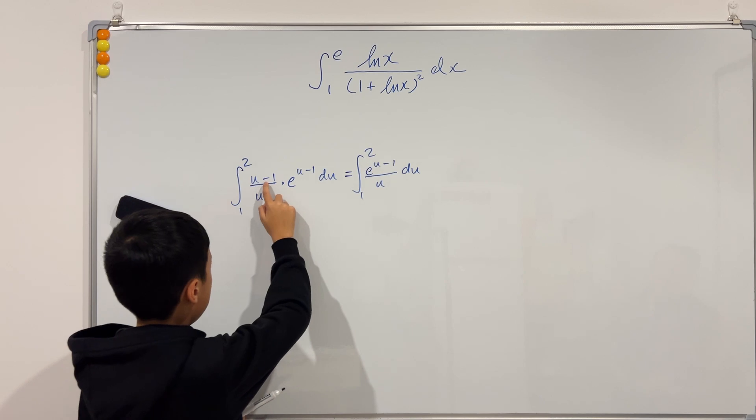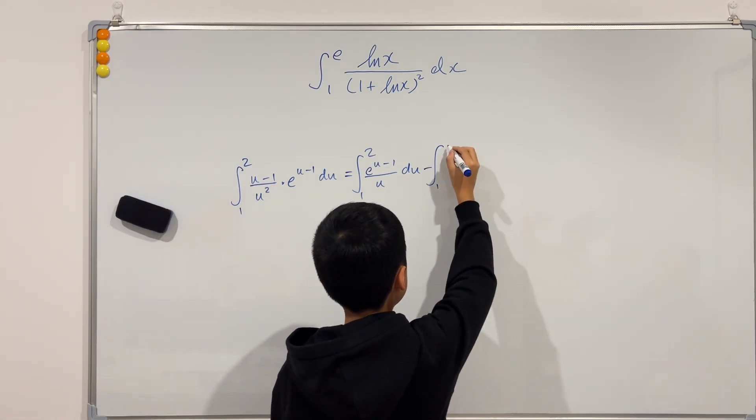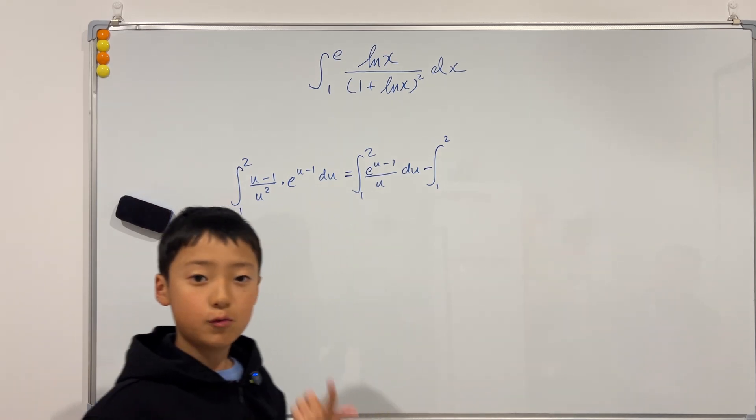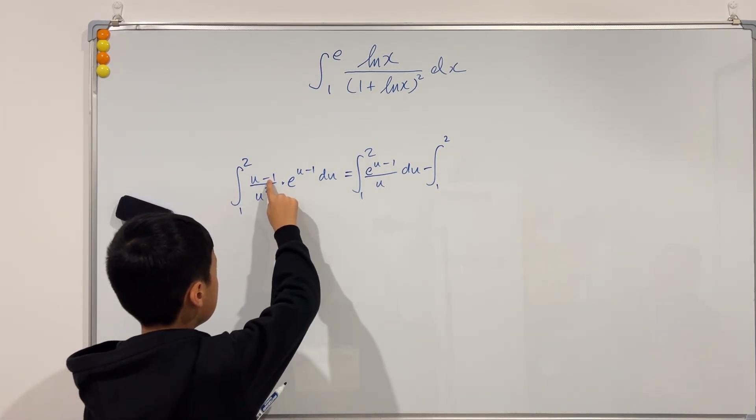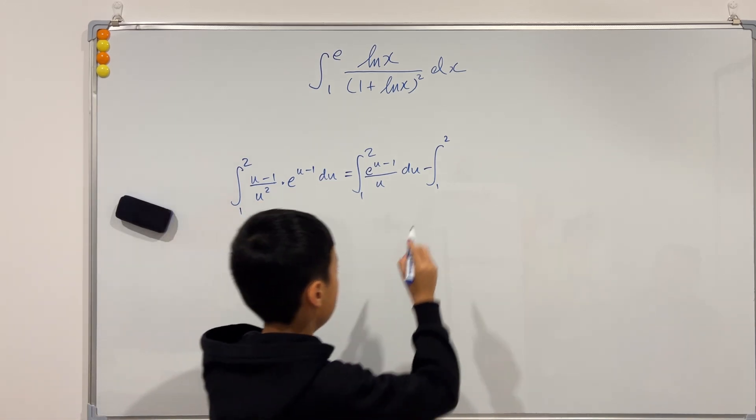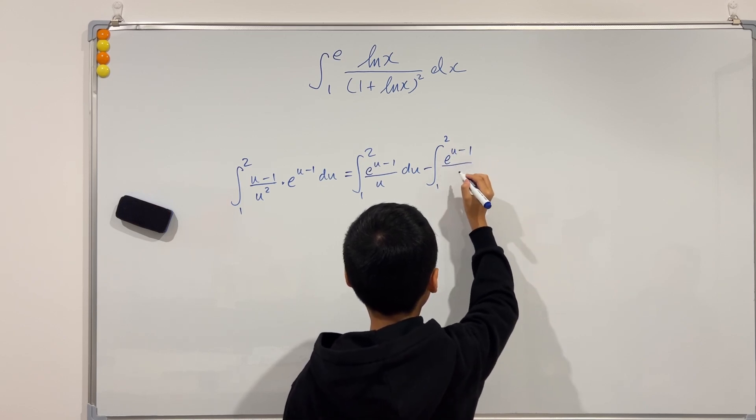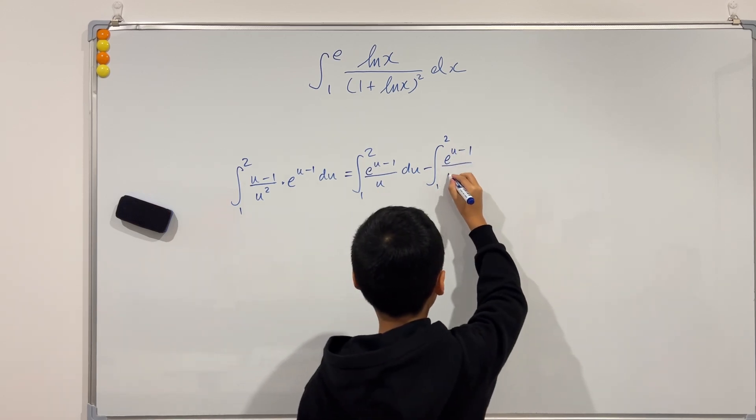And then as you see, minus the second integral also goes from 1 to 2. We do this 1 times this over that. So it's very simple. It's just still e to the u minus 1, but instead of over u, we have over u squared.